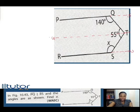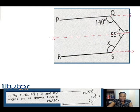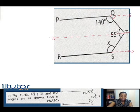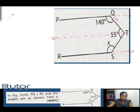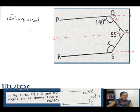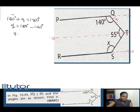Between line UV and line RS, there's a transversal line. If this angle is 140 degrees, let's find this small angle here — let's call it angle Q. We have that 140 degrees plus Q should give us 180 degrees, by the sum of angles on a straight line. So this implies that Q equals 180 degrees minus 140 degrees. Therefore, Q is equal to 40 degrees.